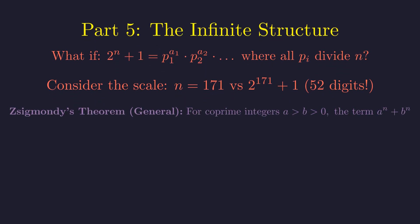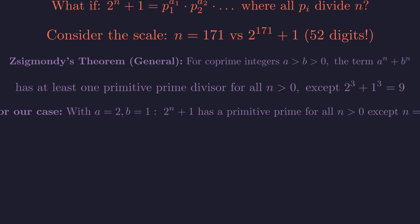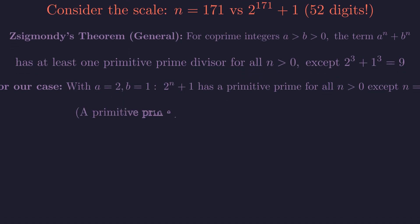Zsigmondy's theorem states that for coprime integers a greater than b greater than 0, the term a to the n plus b to the n has at least one primitive prime divisor for all n greater than 0, with the single exception of 2 cubed plus 1 cubed equals 9. For our problem, with a equals 2 and b equals 1, the theorem guarantees that 2 to the n plus 1 has a primitive prime divisor for every n greater than 0, except for n equals 3.